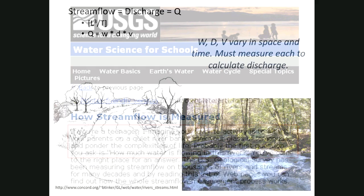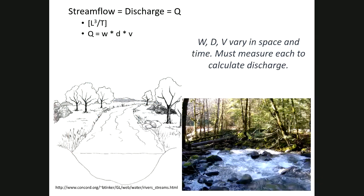When I say streamflow, other hydrologists might say discharge or use the abbreviation Q. Discharge is the volume of water flowing past a point in a given time. Since it's a volume, it has dimensions of length cubed — width, depth, and length — per time. We use units like cubic feet per second, cubic meters per second, or million gallons per day. If you're working for the US government like the USGS, you'll use cubic feet per second; if you're working in the metric system, you'll use cubic meters per second.